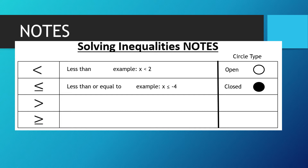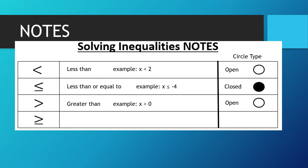The next symbol — notice we're pointing in the opposite direction now. That is the greater than symbol. Example: x is greater than 0, so all the numbers to the right of 0 on the number line. It does not include 0, so when we graph that, that is also an open circle.